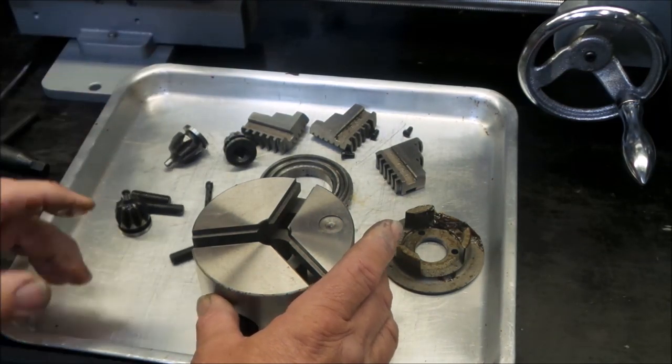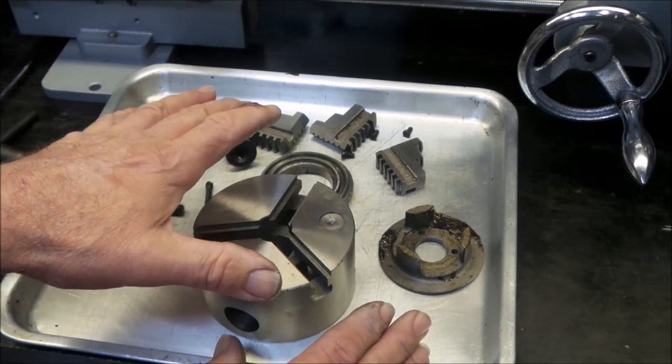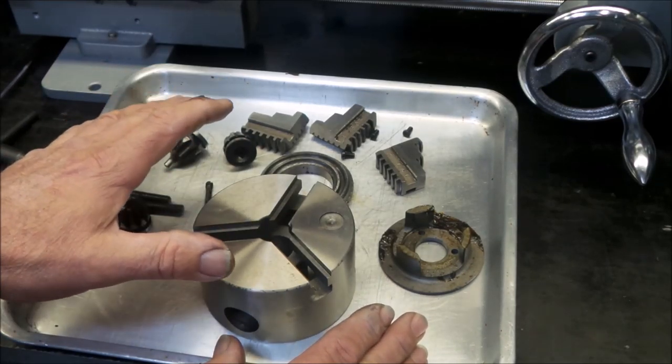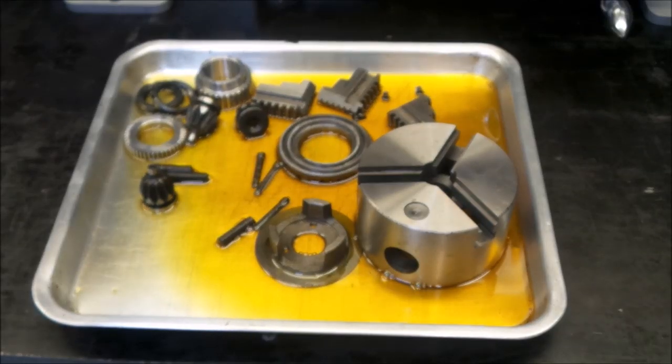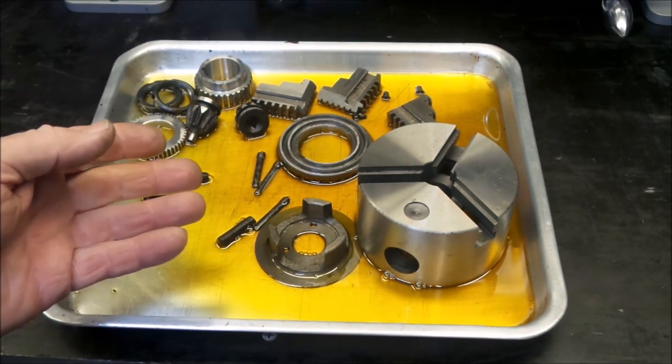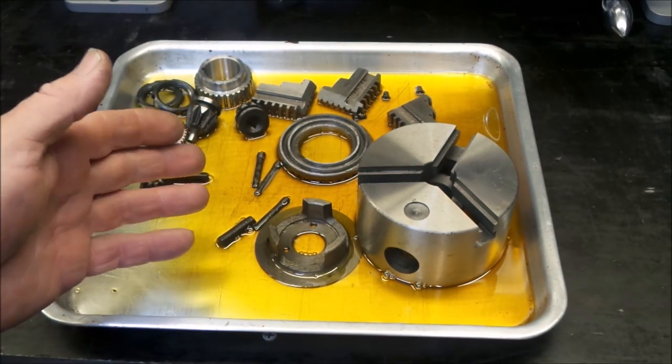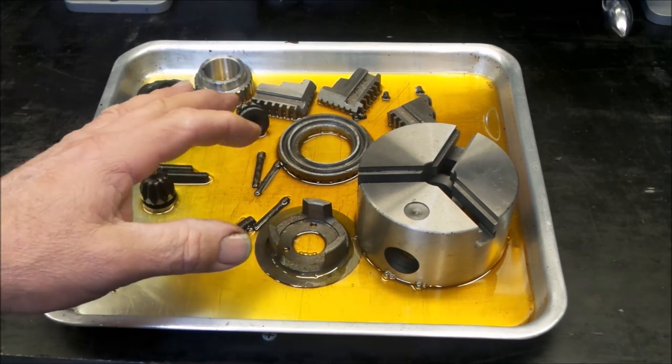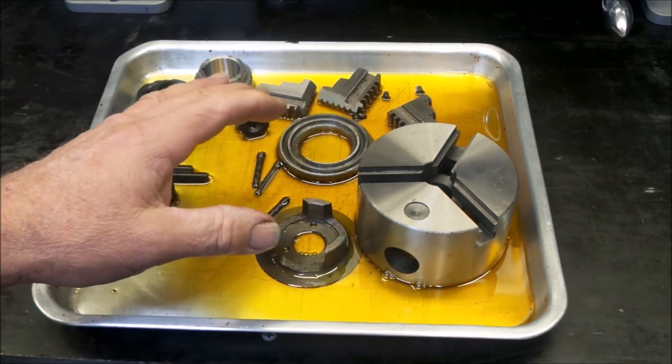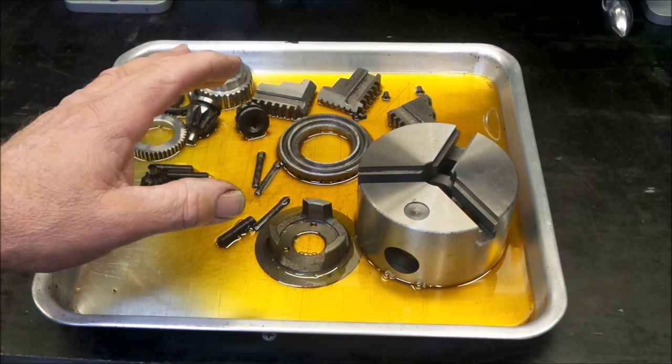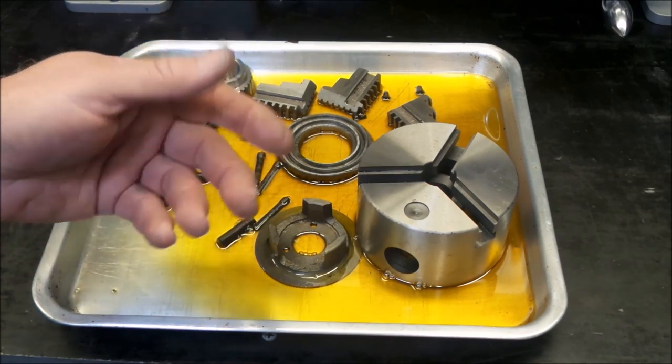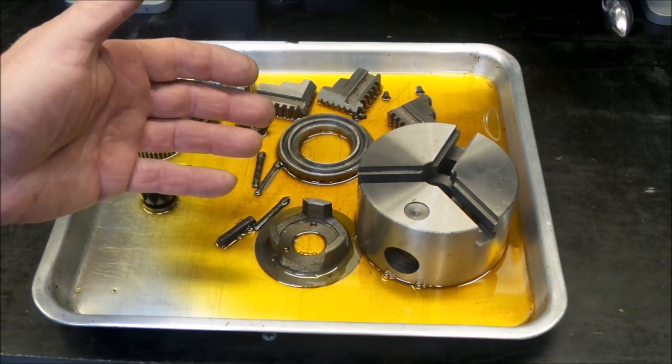There's the bloody grub screws off the back. Might throw a bit of degreaser in this and start cleaning stuff up. I'm just throwing a bit of degreaser in there so you can see what the degreaser looks like before we started. I've actually wiped all the grease and stuff out of the chuck just with paper towel, just so that it gives us more of an idea of what's actually coming out of it.